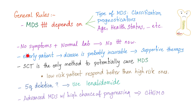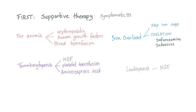If there are no symptoms and labs are normal, no treatment is needed. If the patient is elderly, MDS is probably incurable — offer supportive therapy. Stem cell transplant is the only method to potentially cure MDS. If there is 5q deletion, use lenalidomide. For advanced MDS with a high chance of progressing to AML, give chemotherapy.